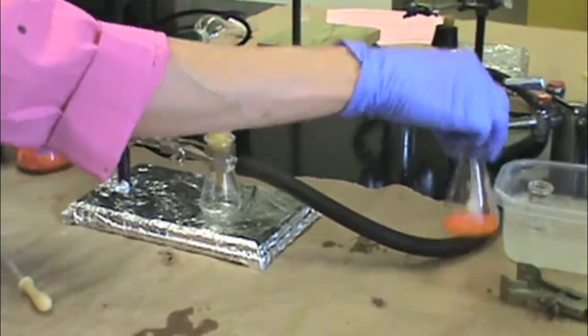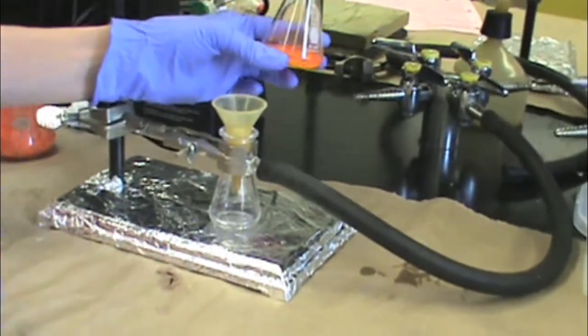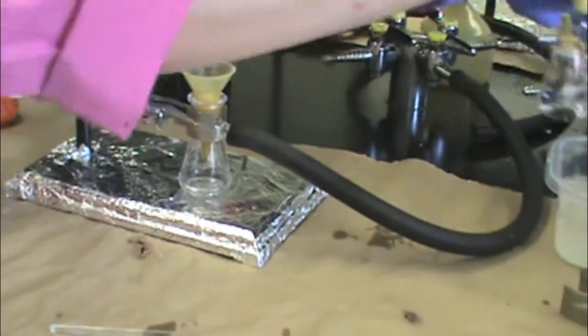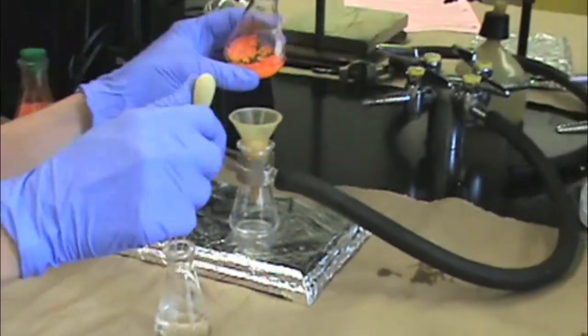Once you do this, you can take your crystals and add some of your recrystallization solvent that has been chilling using a pipette.